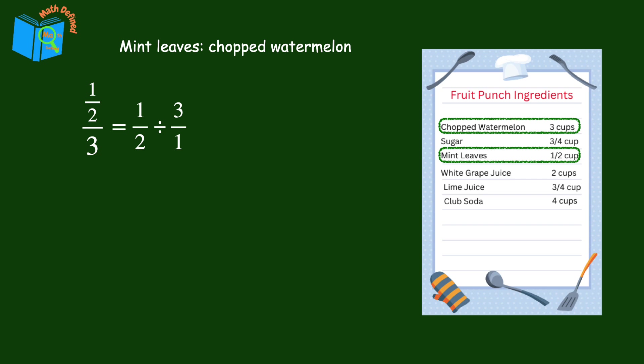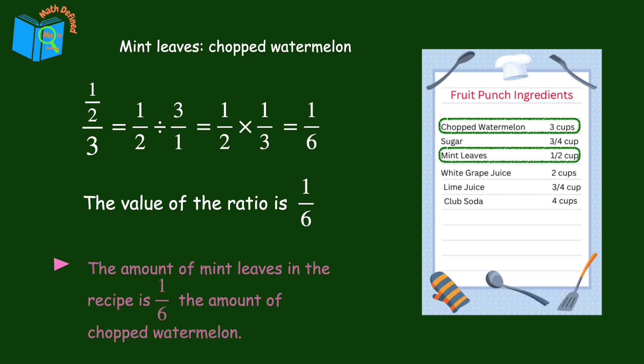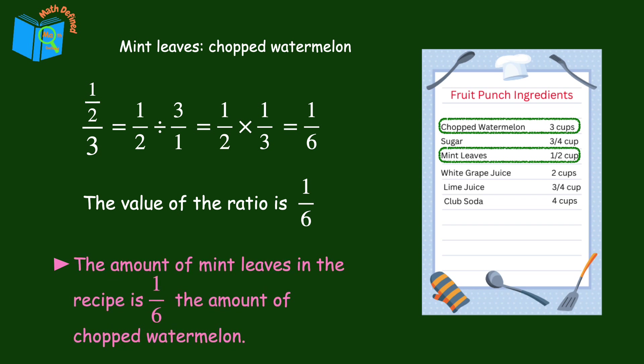Remember, to divide this pair of fractions, we need to multiply by the reciprocal of three over one. One half times one third is one sixth. So the value of the ratio is one sixth, which means that the amount of mint leaves in the recipe is one sixth the amount of chopped watermelon.